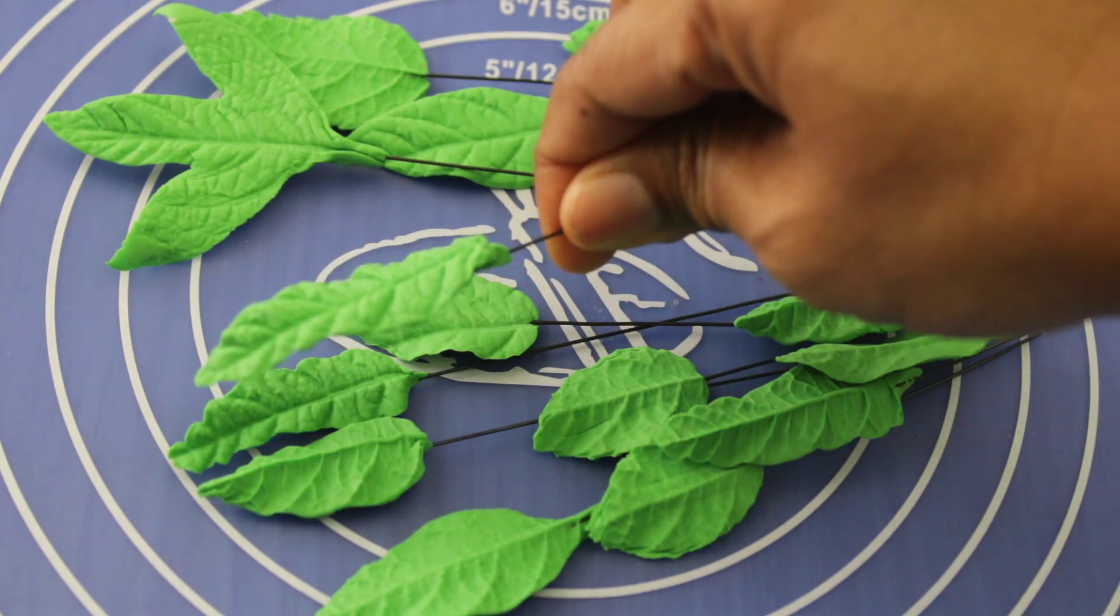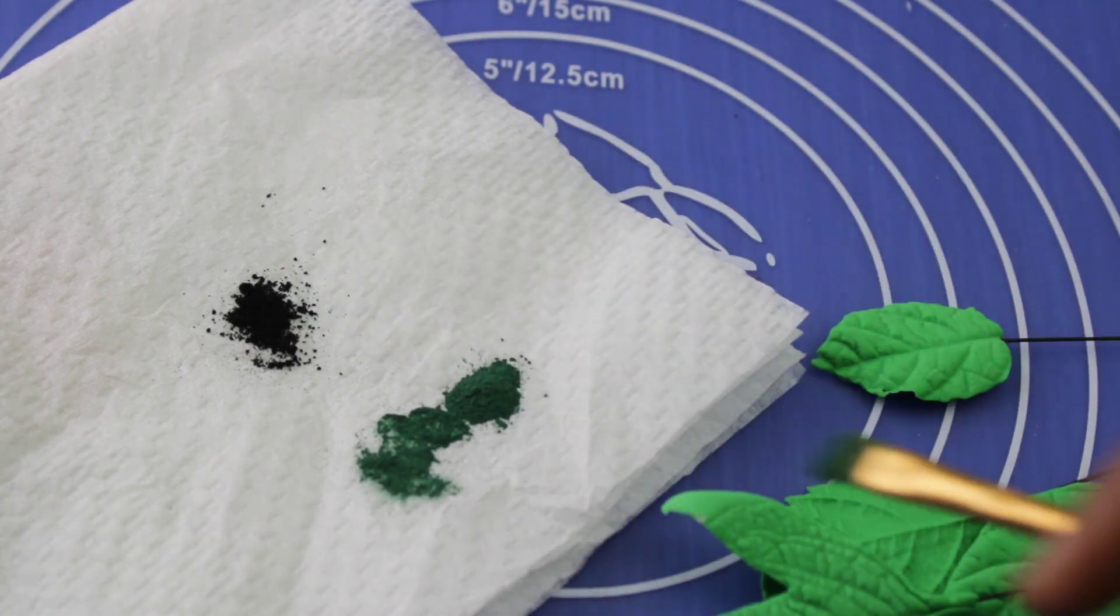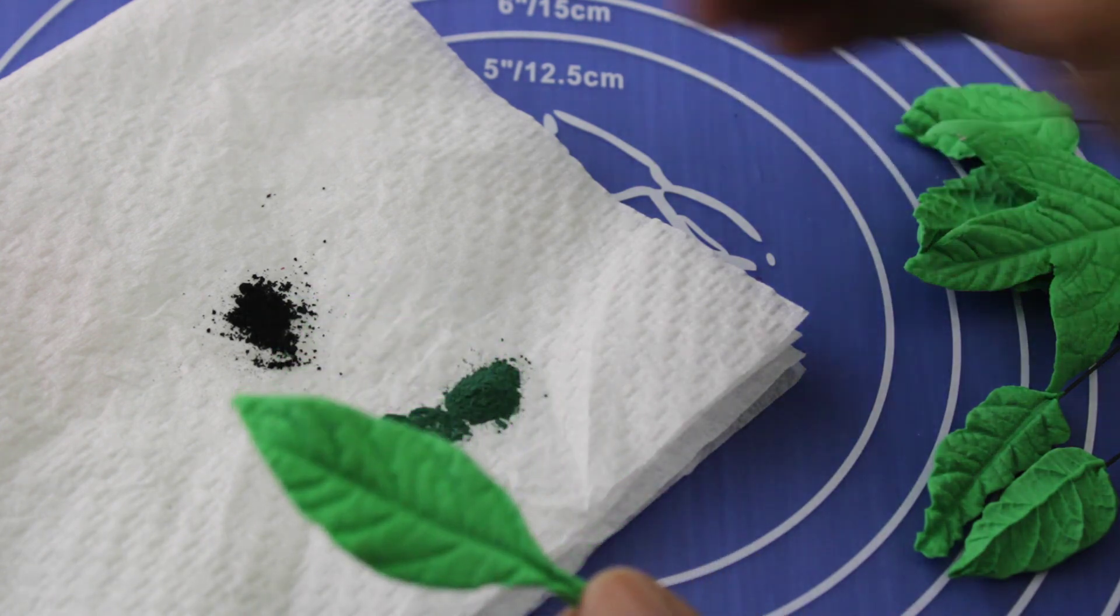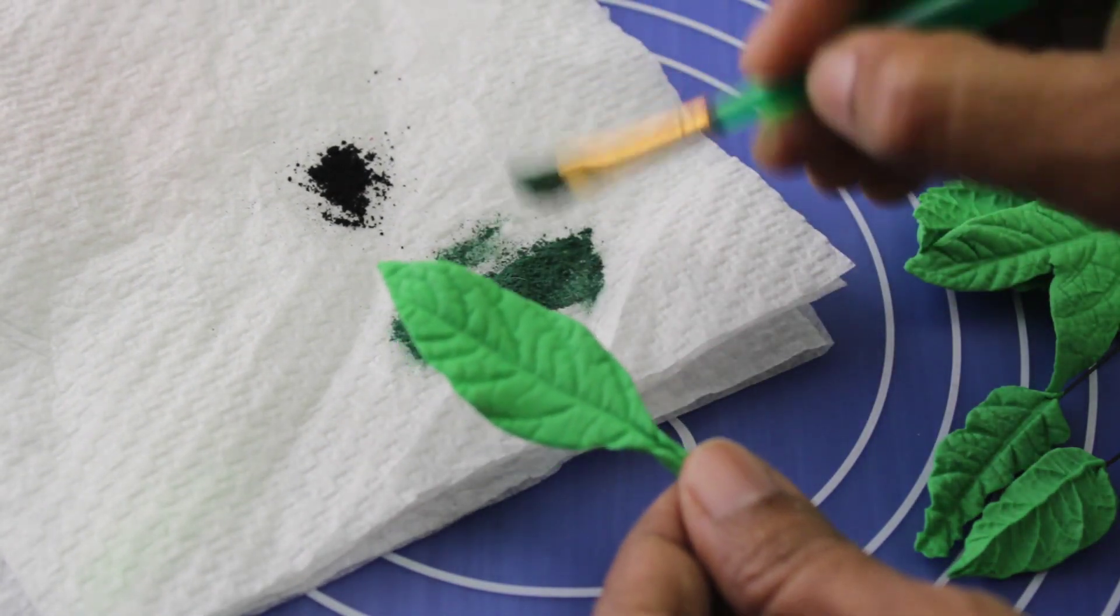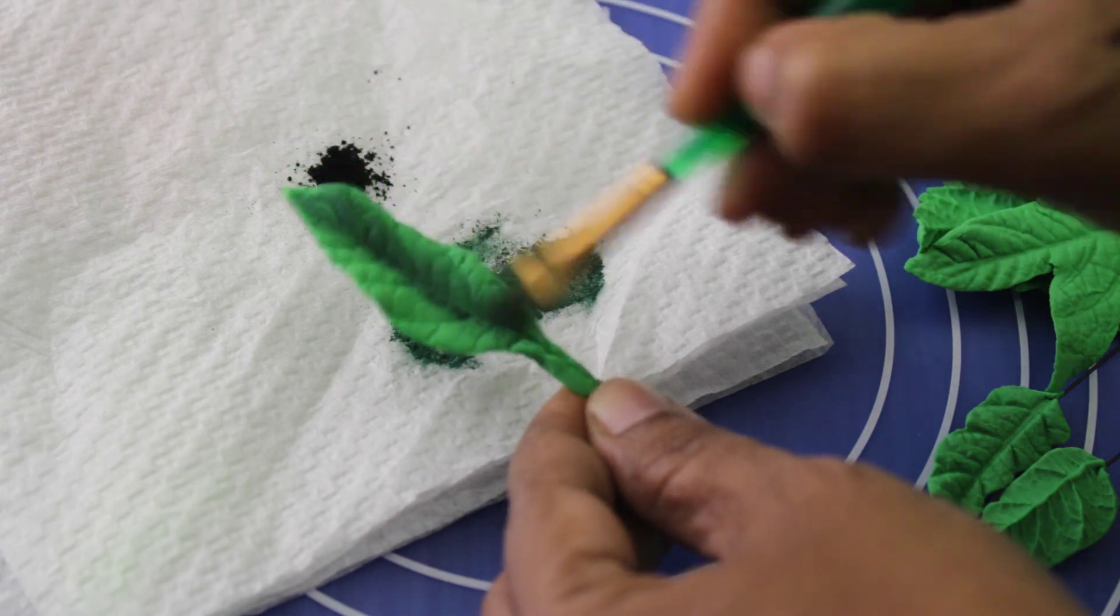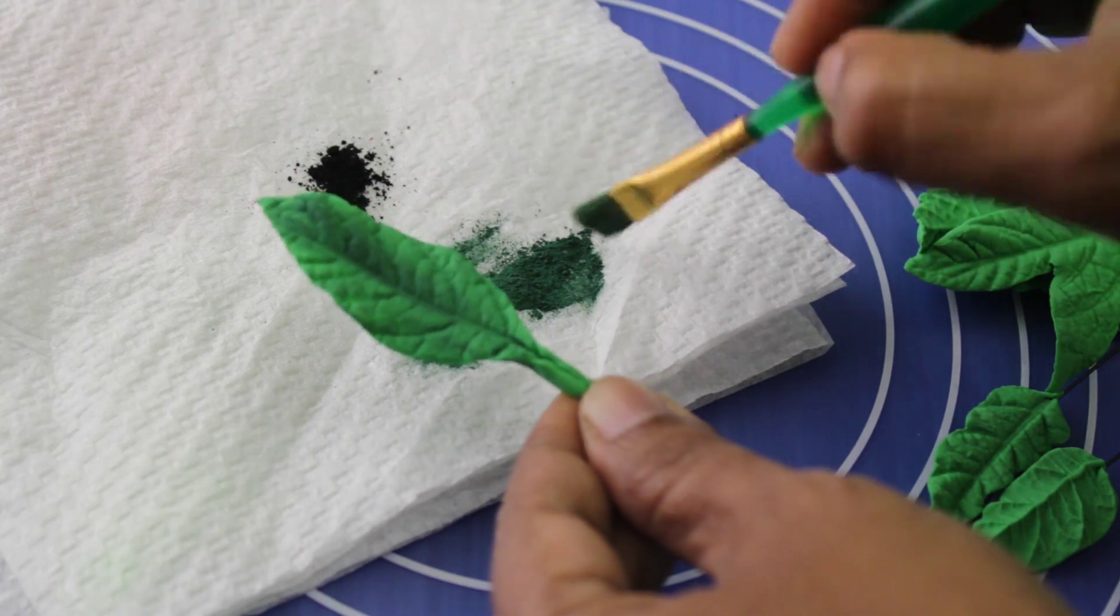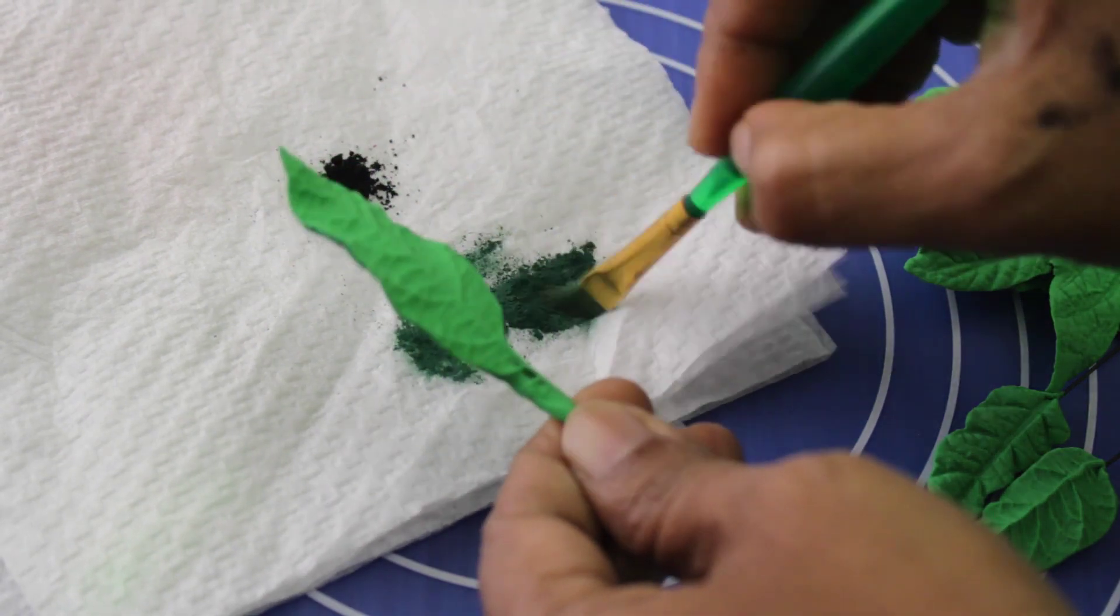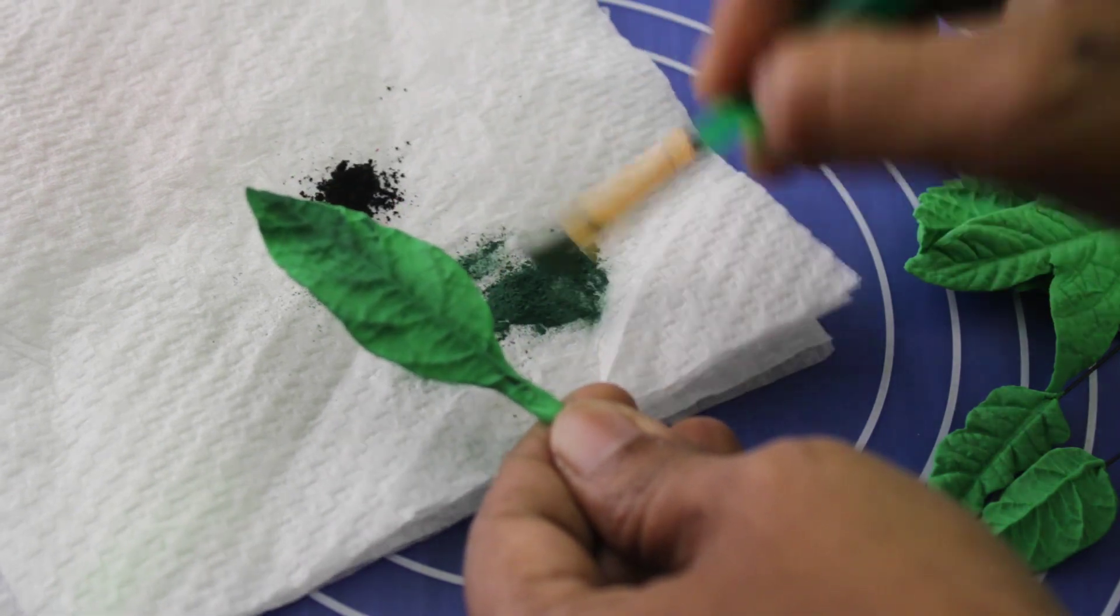They are all dry. I take some dark green color and black. First I am using this dark green on my leaves. I take one leaf and start doing this way, starting from middle to this side, the outer part, and the edges. The same way, the back, the edges.